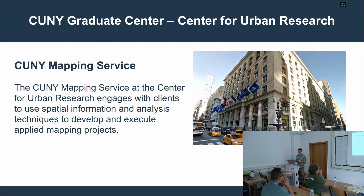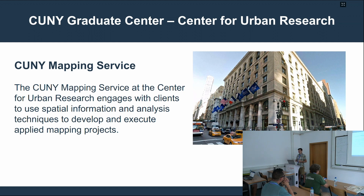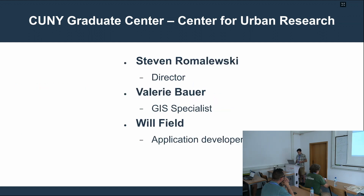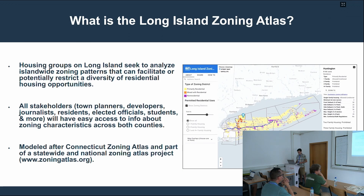We make maps that look at different kinds of civic issues around the city, around the state, and sometimes around the whole country. For instance, we're making maps where people can put in their address and see who their government representatives are. We did a lot of work around the census in 2020. It's directed by Steven Romolewski; Valerie Bauer is the GIS specialist, and I'm the software developer, taking all the data they give me and figuring out how to put it into a web map that performs well and communicates the underlying data.